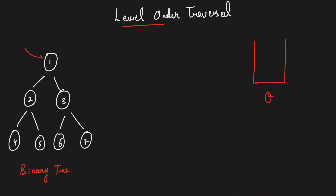So let's define a queue data structure. Now this queue will be initially having the root of the tree, that's 1. Now in order to store the traversal level-wise, we will be requiring some data structure. So let's take a vector of vector, or an array list of array list. I'm going to take a vector of vector which stores the level-wise traversal. Now these are the initial data structures that I'll be taking. Now let's start iterating over this queue.